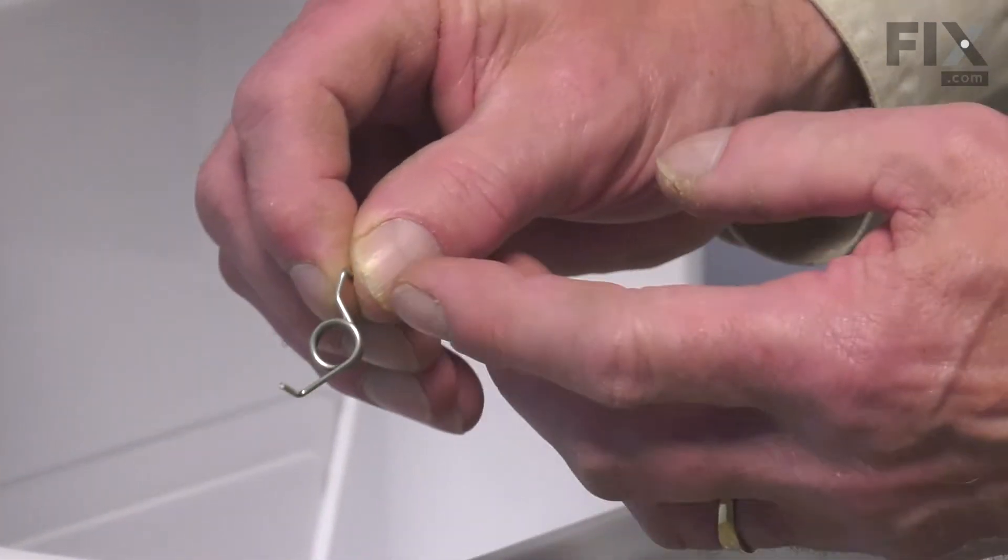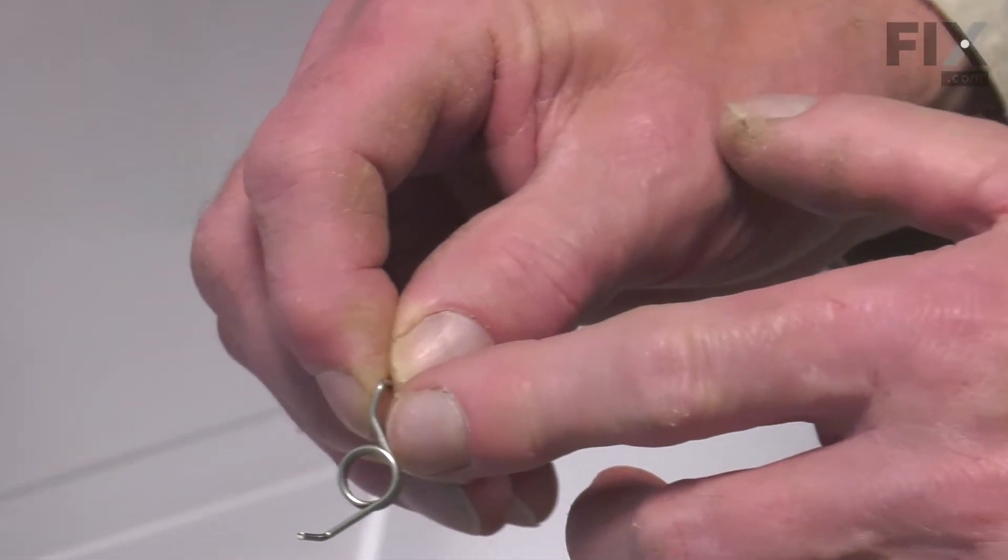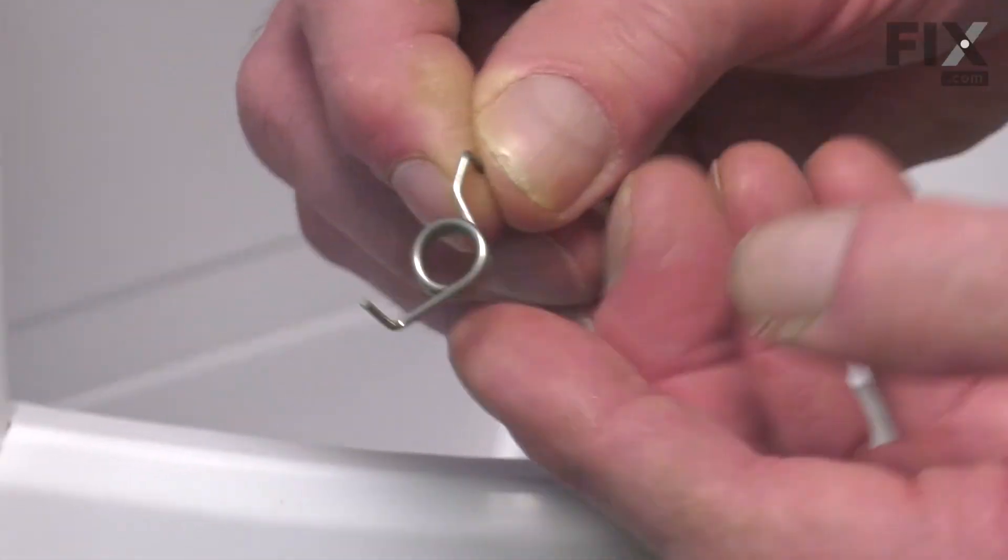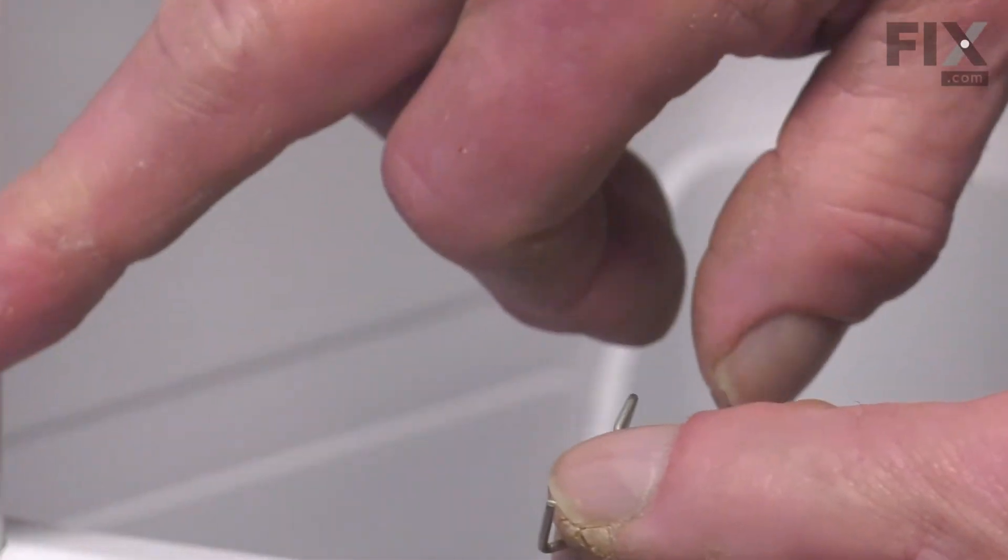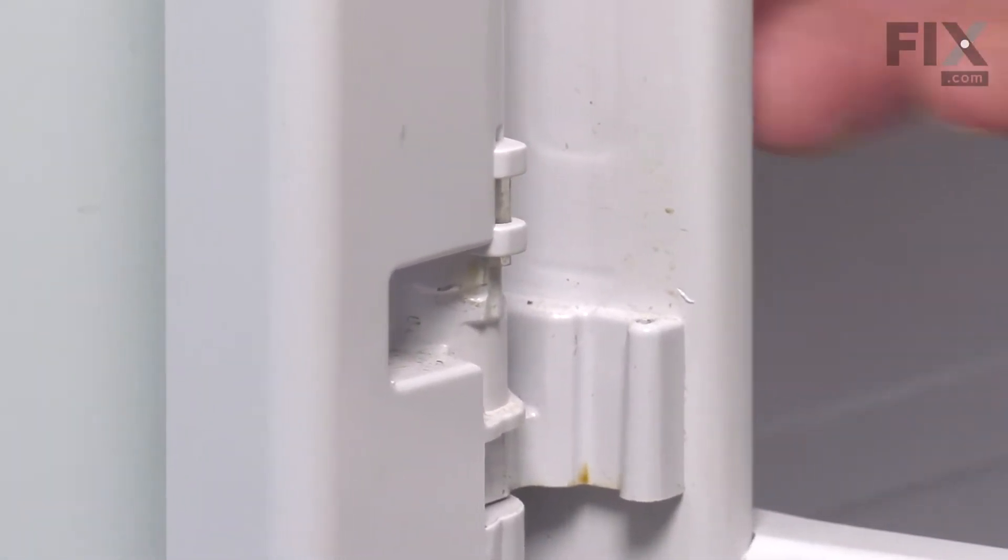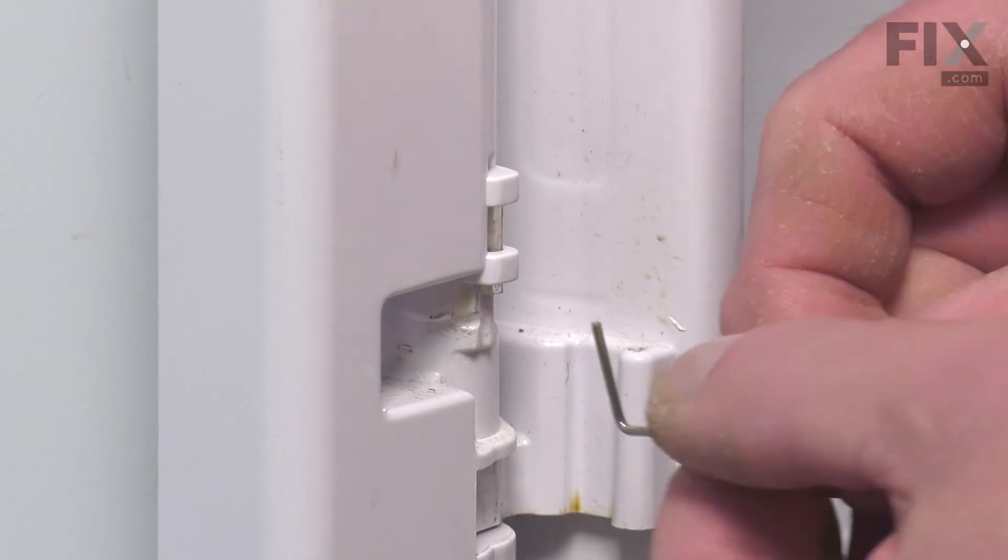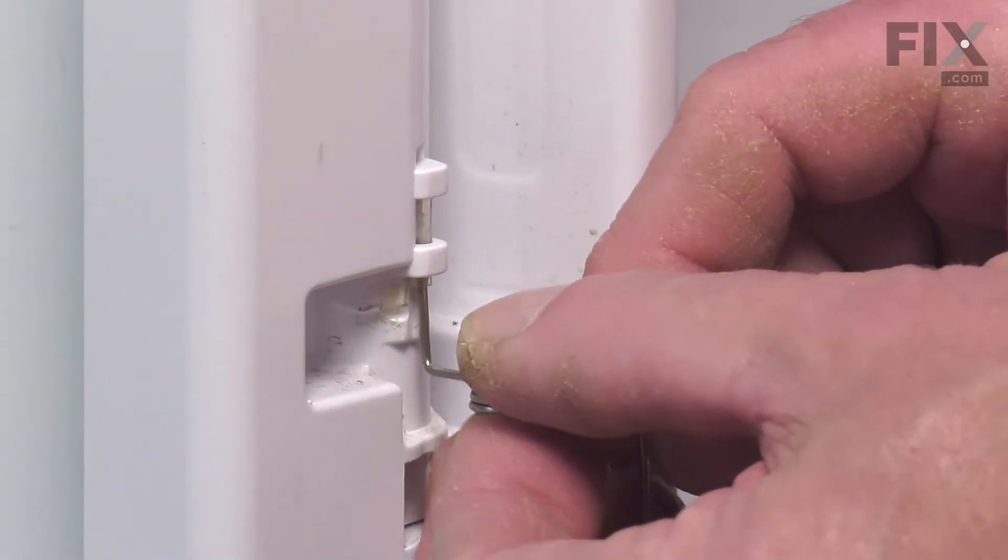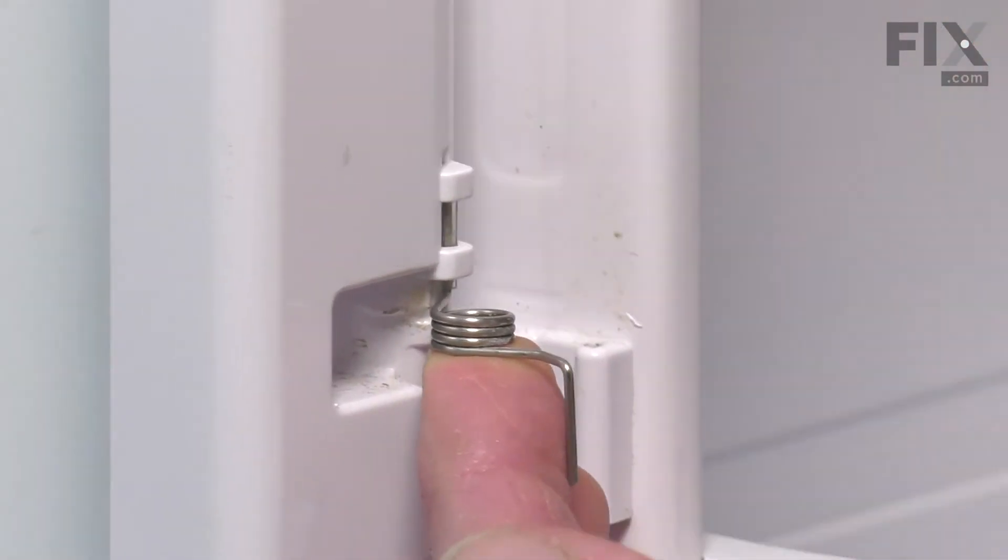You can discard the defective spring and when we go to install the new one, take note that there is a bent end on that spring and that will attach to the lower hinge that is attached to the actual door liner. We'll fit the opposite end up into that sleeve inside of that center mullion.